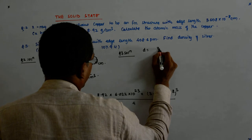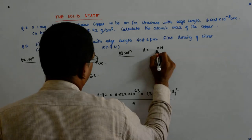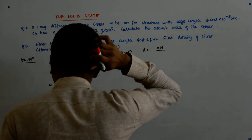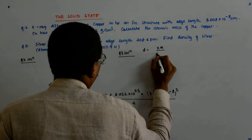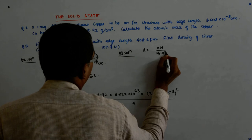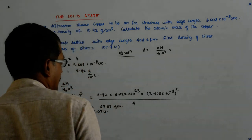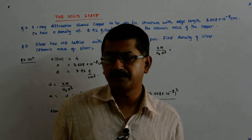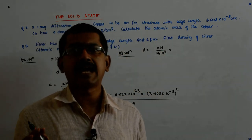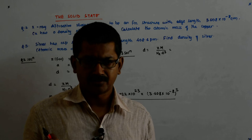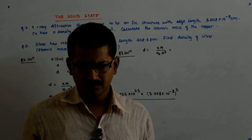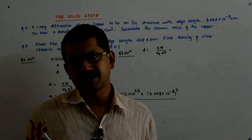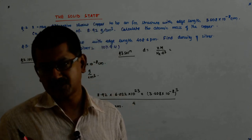So, D is equal to ZM upon NA A cube. When I am using the capital M, you should be extremely clear. It is gram molecular mass. You have to use A as centimeter so that you get the density as gram per centimeter cube.